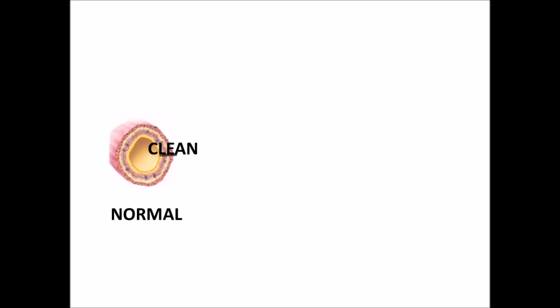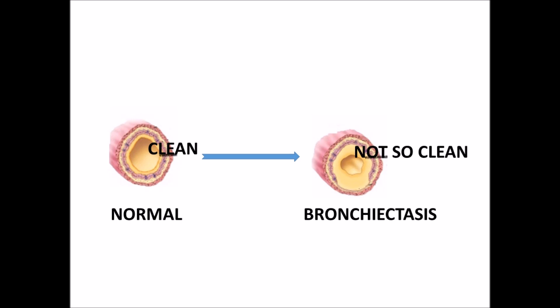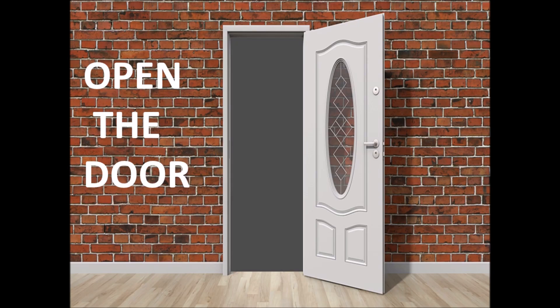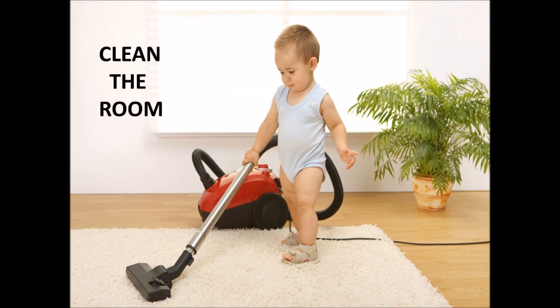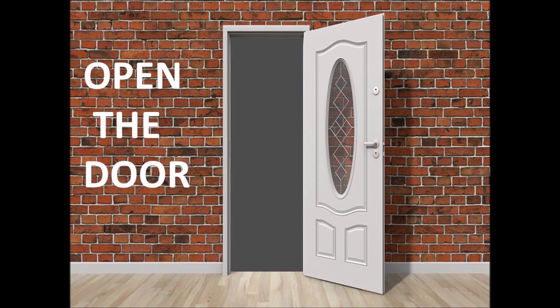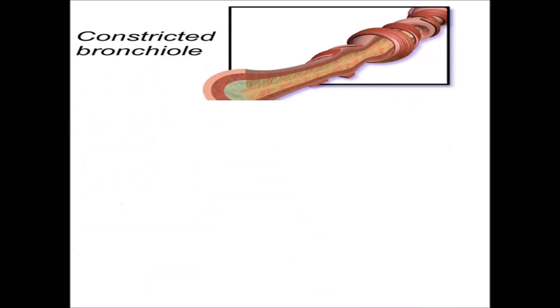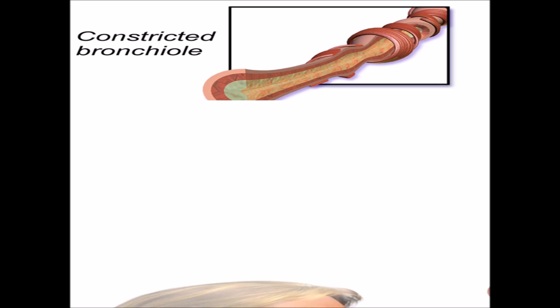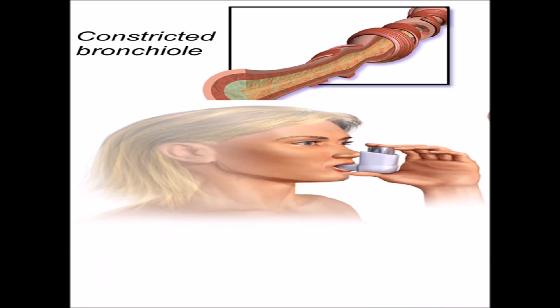B is for bronchial hygiene. Normally bronchioles are clean, but in bronchiectasis they are not. To understand how we clean a bronchial airway, imagine cleaning a room: first you open the door, then clean the room, and for tough stains you use special reagents. Opening the door is compared to using a bronchodilator — inhaling bronchodilators dilates constricted bronchioles, giving access to clean them.